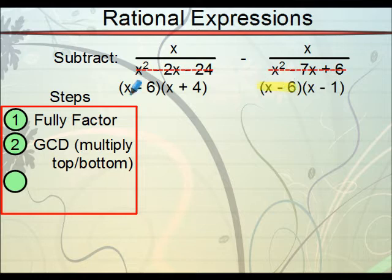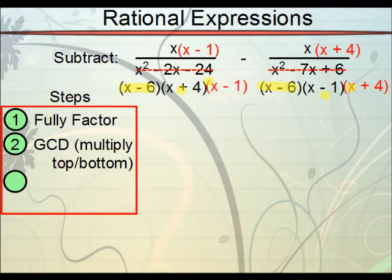But, we have an x-1 in this fraction, not here. x+4 in this fraction, but not here. So, that's what we're going to multiply. We'll multiply x-1, top and bottom, to this first one. x+4 to the second one. And, in doing so, we'll wind up with identical denominators.